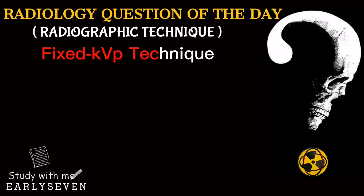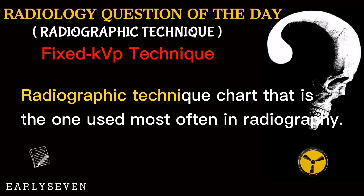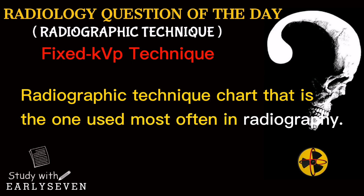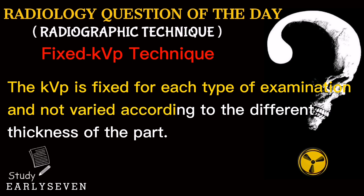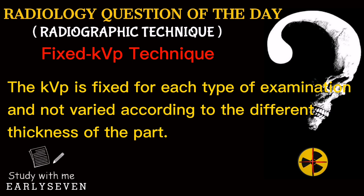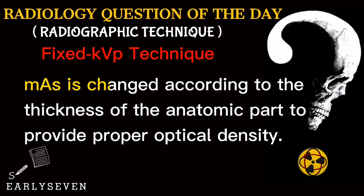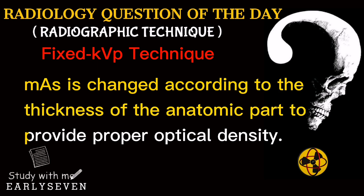The Fixed KVP technique, on the other hand, is a radiographic technique chart that is the one used most often in radiography. The KVP is fixed for each type of examination and not varied according to the different thickness of the body part. The MAS is changed according to the thickness of the anatomic part to provide proper optical density.